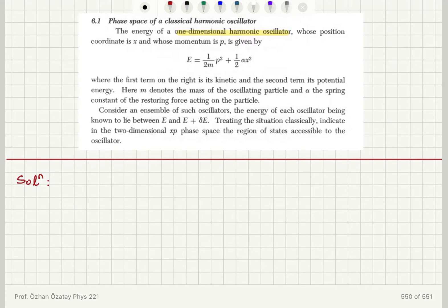Here, m denotes the mass of the oscillating particle and alpha the spring constant of the restoring force acting on the particle.